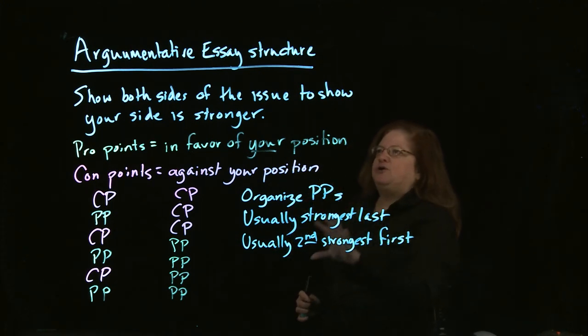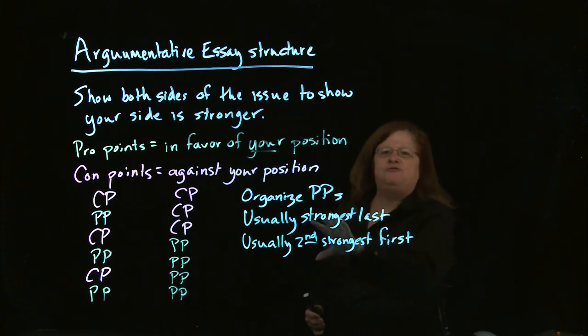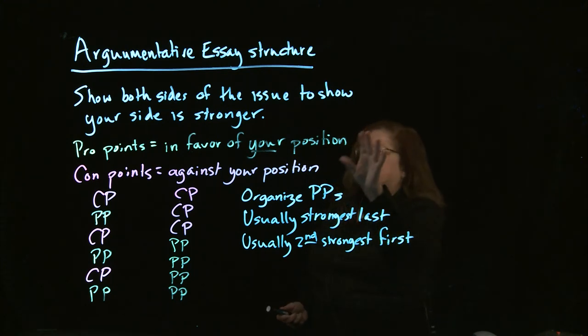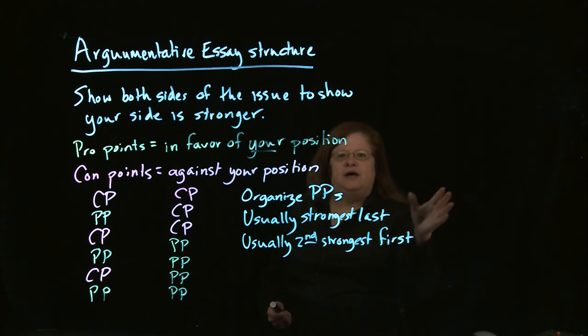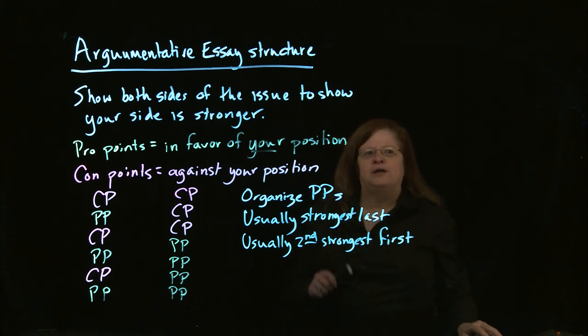So this is how you would want to put together an argumentative essay. You would figure out what order you want the pro points in, and then after that, you can figure out which con points are the best ones to stick before the pro points so you can have the con points in an order that matches the pro points. But the basic principle of this thing is to make your points in an order and organize them in such a way that it really proves to the reader your side of the issue is stronger than the other side.